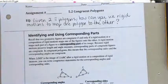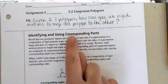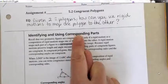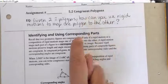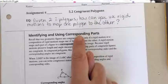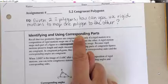Identifying and using corresponding parts — this is really how we're going to figure this out. Congruent polygons will have corresponding parts that are also congruent.